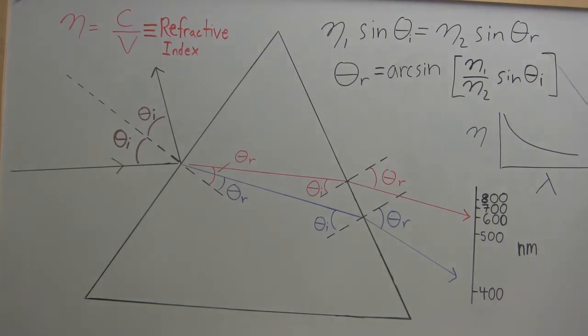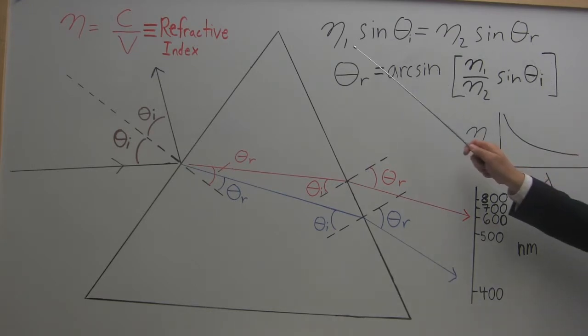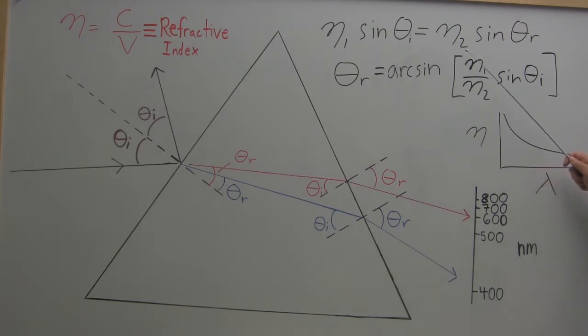First we'll cover the equation that tells us about refraction. That's given by Snell's law. Snell's law states that N1 sine of the incident angle equals N2 times the sine of the refractive angle. Where N1 is my index of refraction in the original medium, N2 is my index of refraction in the new medium. This is my incident angle, and this is my refractive angle.